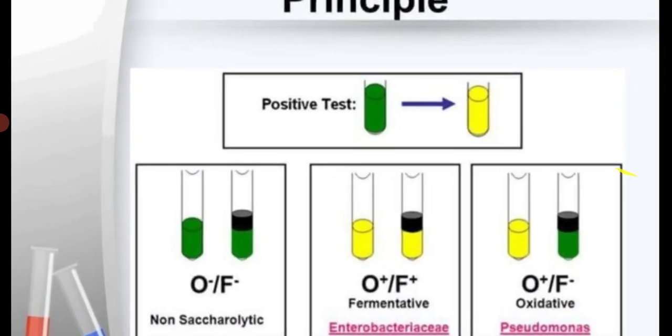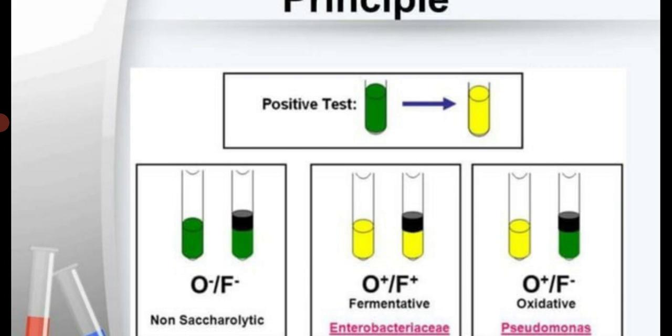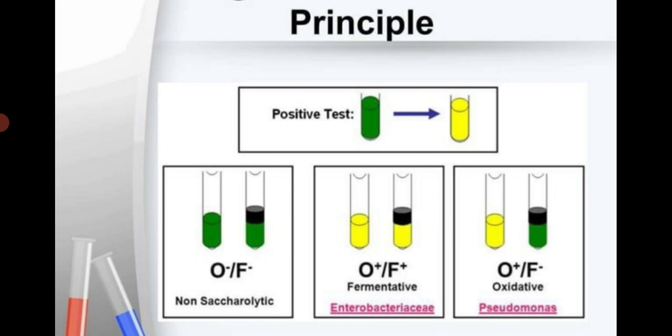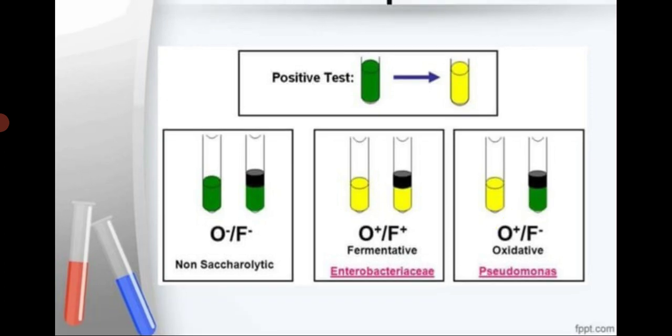A positive test result is indicated by a color change from green to yellow. For organisms from the family Enterobacteriaceae, which have a fermentative mode of catabolism, both tubes show yellow color. For Pseudomonas, which only carries out oxidative catabolism, only the tube labeled oxidative catabolism turns yellow, while the fermentative catabolism tube remains green. This test can be used to differentiate Pseudomonas from other Enterobacteriaceae members.